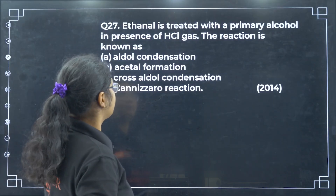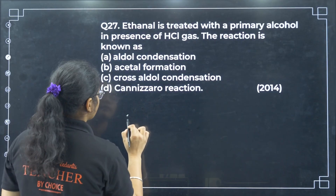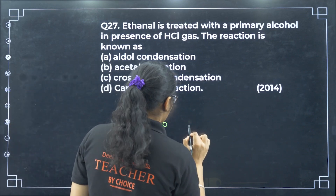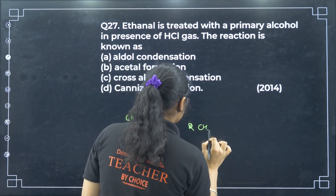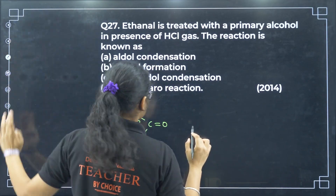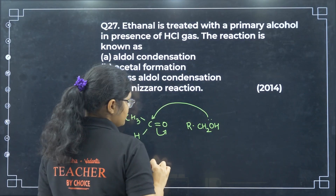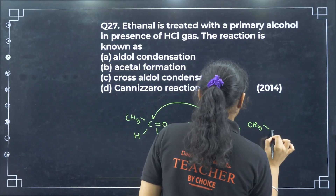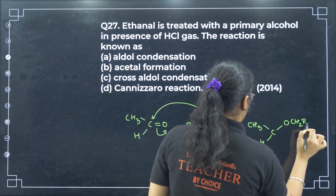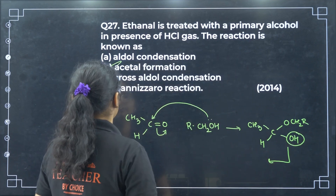Ethanol treated with a primary alcohol in the presence of HCl gas: when CH3C double bond O (acetaldehyde) reacts with a primary alcohol RCH2OH, the alcohol attacks the carbonyl, and after a further reaction removing water, you get a compound CH3CH with OCH2R and OH, which on further reaction gives an acetal. This is called acetal formation — option B.